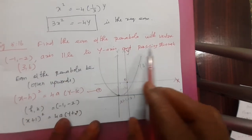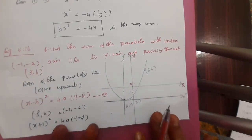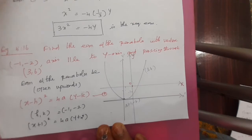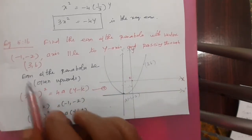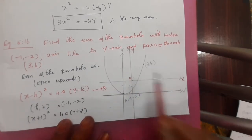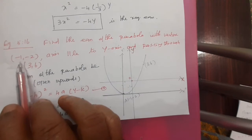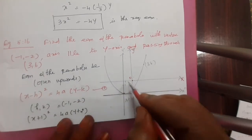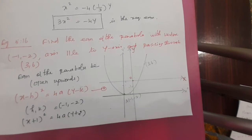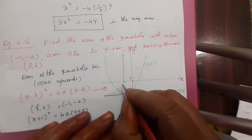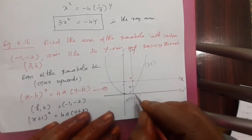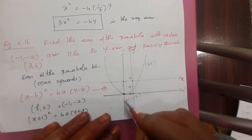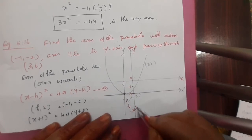Find the equation of the parabola with vertex minus 1 comma minus 2. Normally draw the x-axis and y-axis, then plot the vertex at minus 1 comma minus 2. The vertex is minus 1 on x and minus 2 on y. So the vertex is minus 1 comma minus 2, symmetric about the y-axis — parallel to the y-axis. Since the parabola passes through 3 comma 6, which is in the first quadrant, the curve opens upward.